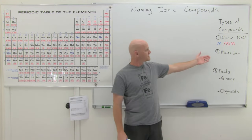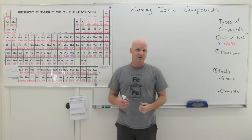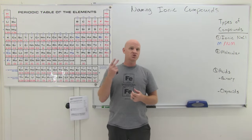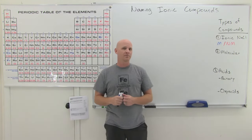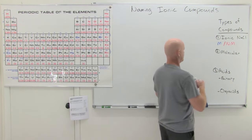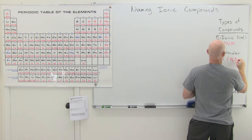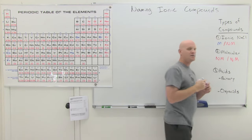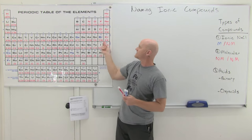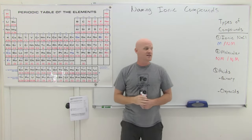Moving on to molecular compounds — specifically binary molecular compounds — these are composed of two elements, which is where the 'binary' part comes from, and both of those elements are non-metals. So you're going to have some combination of two different elements from the right-hand side of the periodic table, above that staircase.